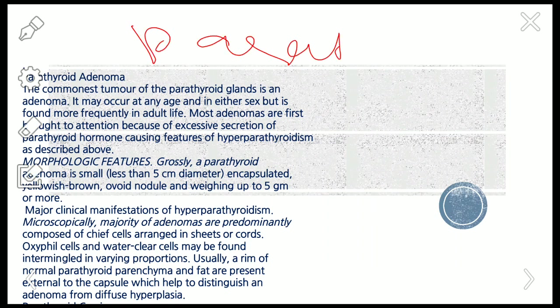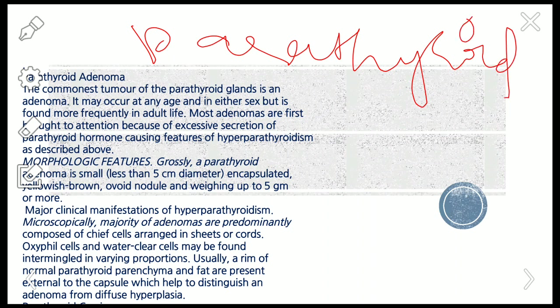Parathyroid tumors are similar to other tumors like pituitary adenoma and adrenal adenoma. Parathyroid adenoma is the most common tumor of the parathyroid gland, occurring at any age and sex but more frequently in adults. These adenomas are first brought to attention due to excess secretion of parathyroid hormone resulting in hyperparathyroidism. Grossly, the adenoma is small — less than 5 cm in diameter — encapsulated, yellow-brown, and weighing up to 5 grams or more. A rim of normal parathyroid parenchyma and fat are present external to the capsule, helping distinguish adenoma from diffuse hyperplasia.